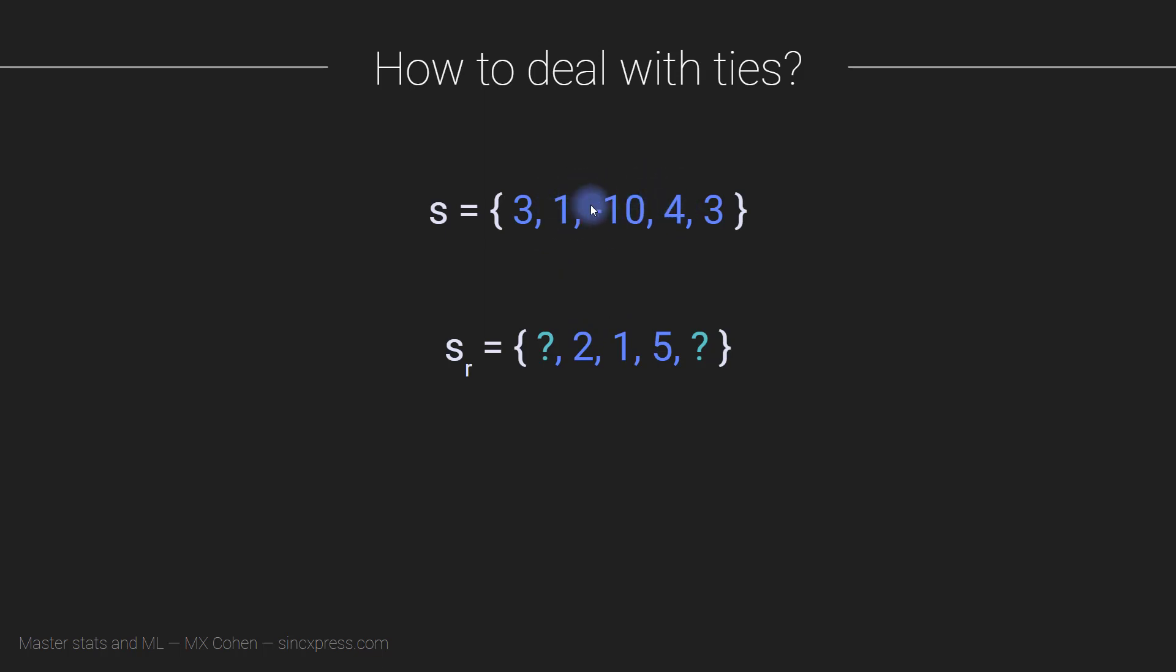For the middle three numbers—and by middle three I'm actually just referring to their spatial locations here, not that they're in the middle in terms of ranks—it's really easy. It's unambiguous. This is definitely the first number, this is definitely the fifth, and this is definitely the second. The question is, one of these has to be 3 and one of them has to be 4. So what do we do? Who do we assign 3 to and who do we assign 4 to?